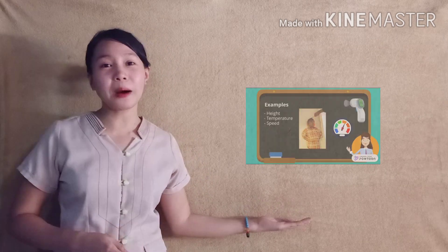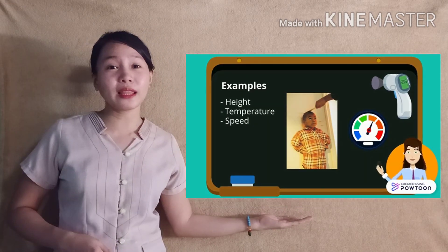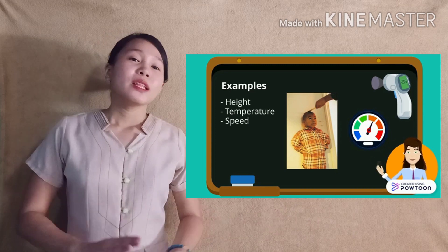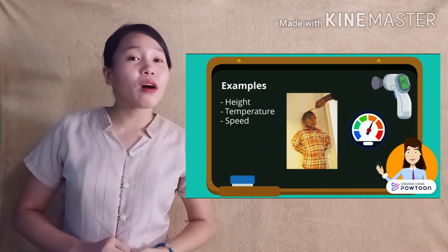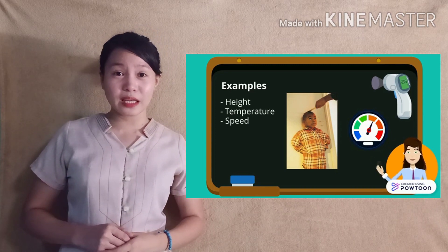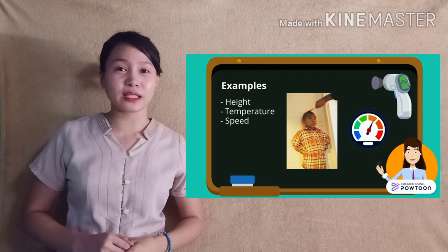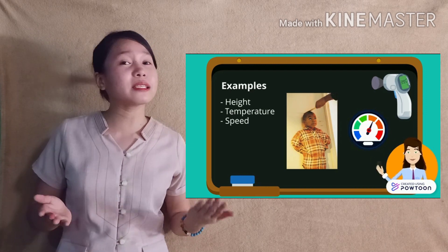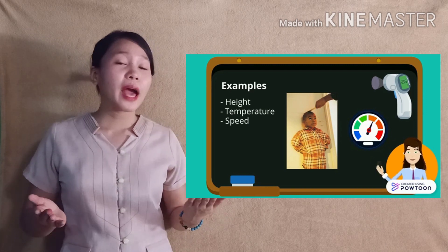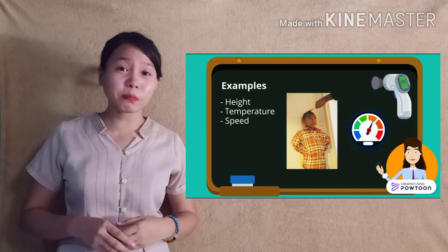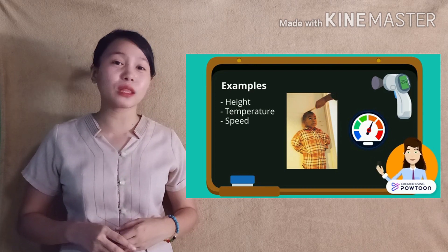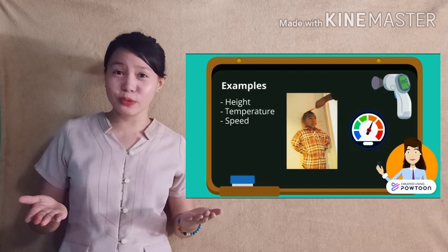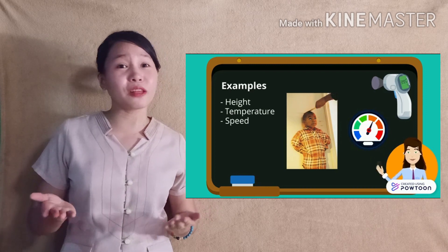Here are a few examples: height, temperature, and speed. The height of male children at age 6 is from 42 to 49 inches. The temperature could range from a negative number to a positive number. And the speed limit here in the Philippines is from 60 to 100 kilometers per hour. What other examples of continuous random variables can you think of?